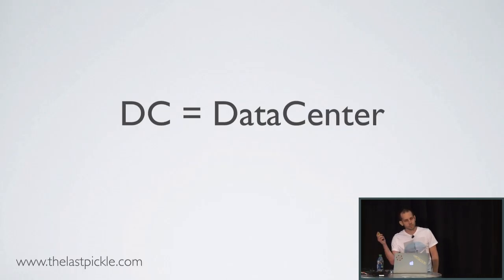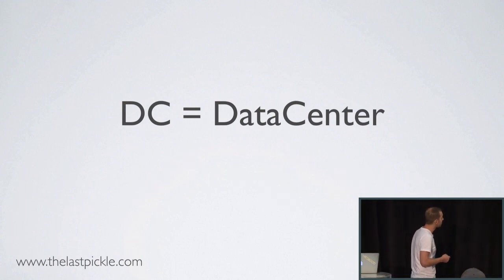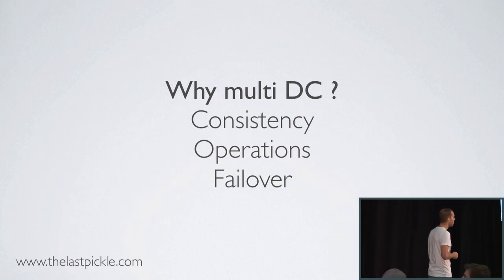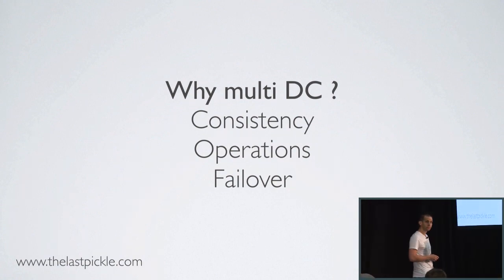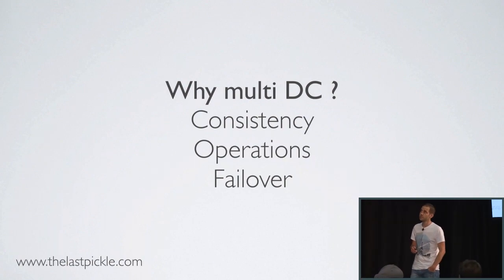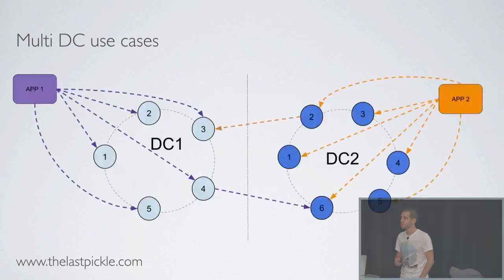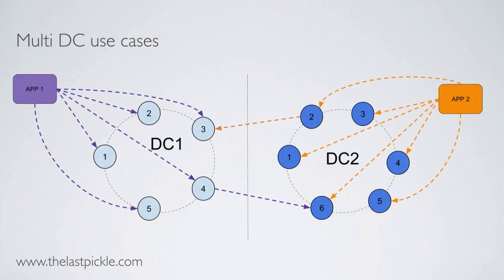Let's assume everyone knows that DC stands for data center. Why would you go multi-DC on your clusters? A few classic use cases: load balancing and disaster recovery. You would want to set up other DCs just to load balance your apps on them and use them as backups in case of problems or downtime in one of them.